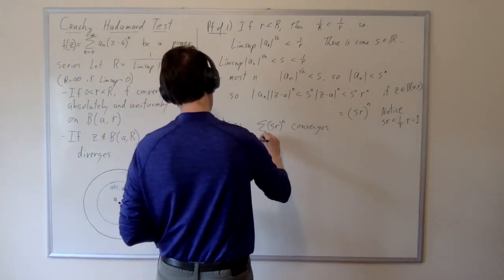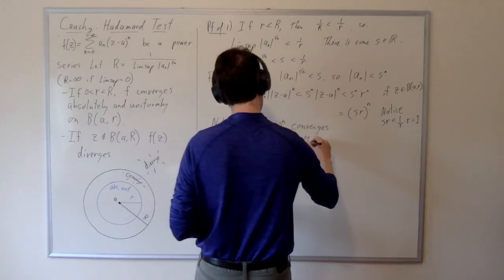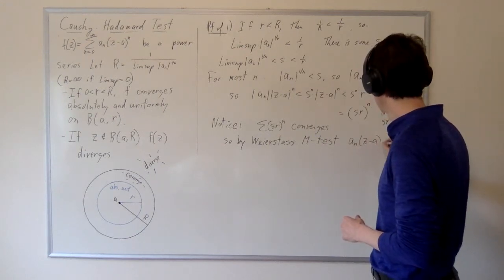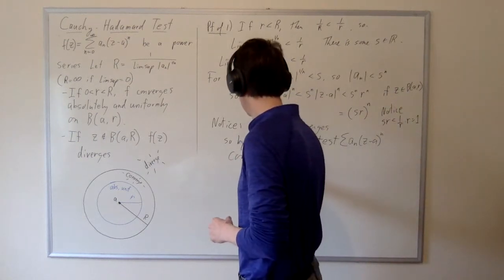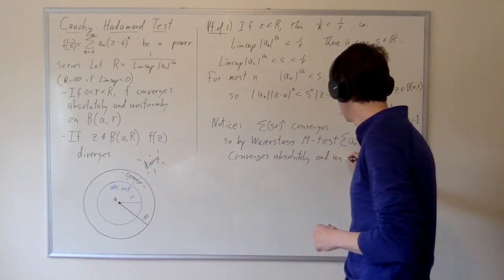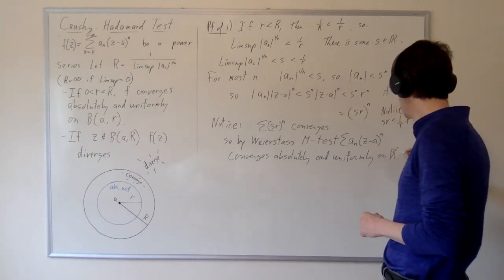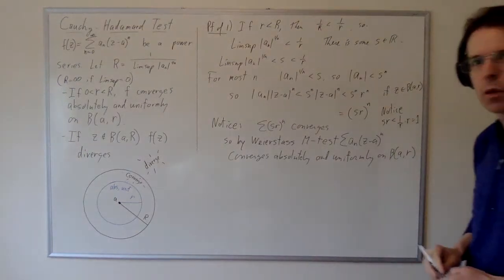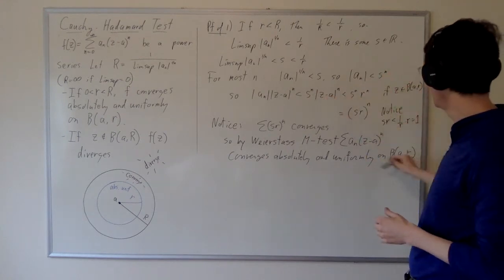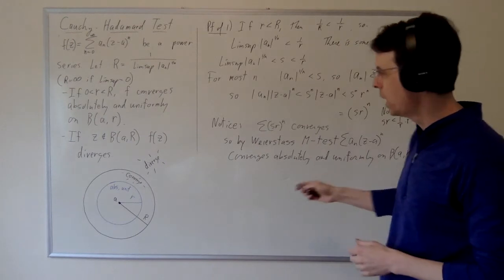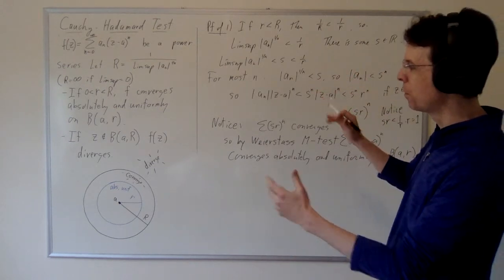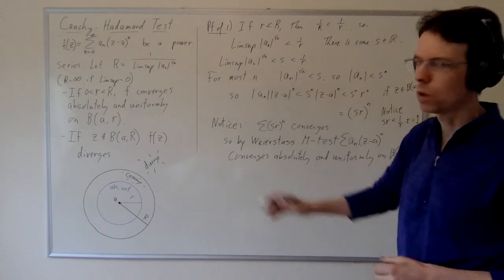Notice that the summation of (s·r)^n converges, and s·r is a constant independent of z, so it's appropriate to use as the M_n in the Weierstrass M-test. By the Weierstrass M-test, we know that the summation converges absolutely and uniformly on B(a, r). So we get absolute uniform convergence on B(a, r). This establishes that if we back off from the radius of convergence a little bit, we get absolute uniform convergence on the resulting ball.